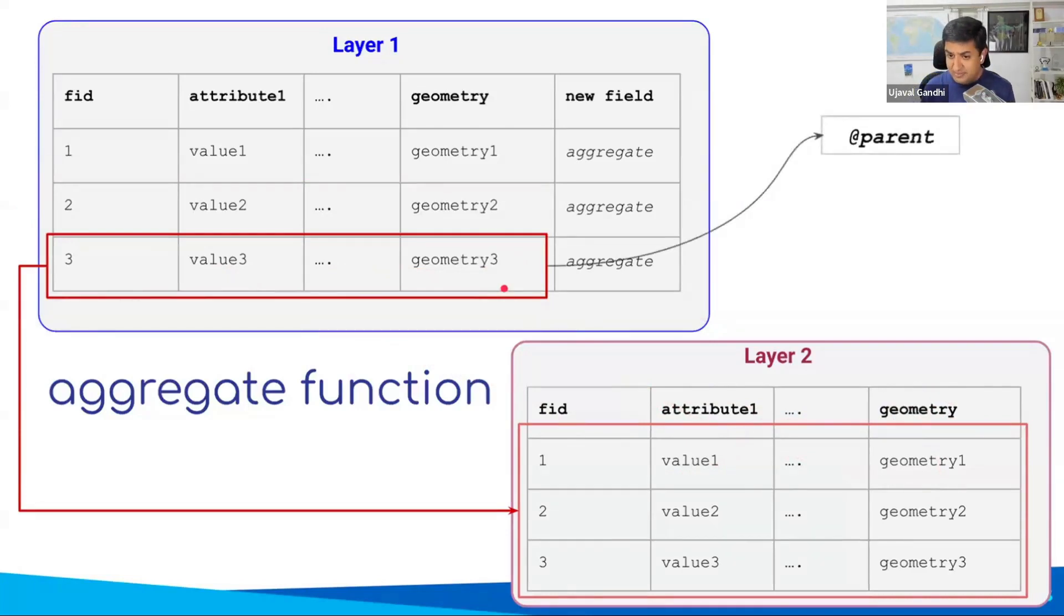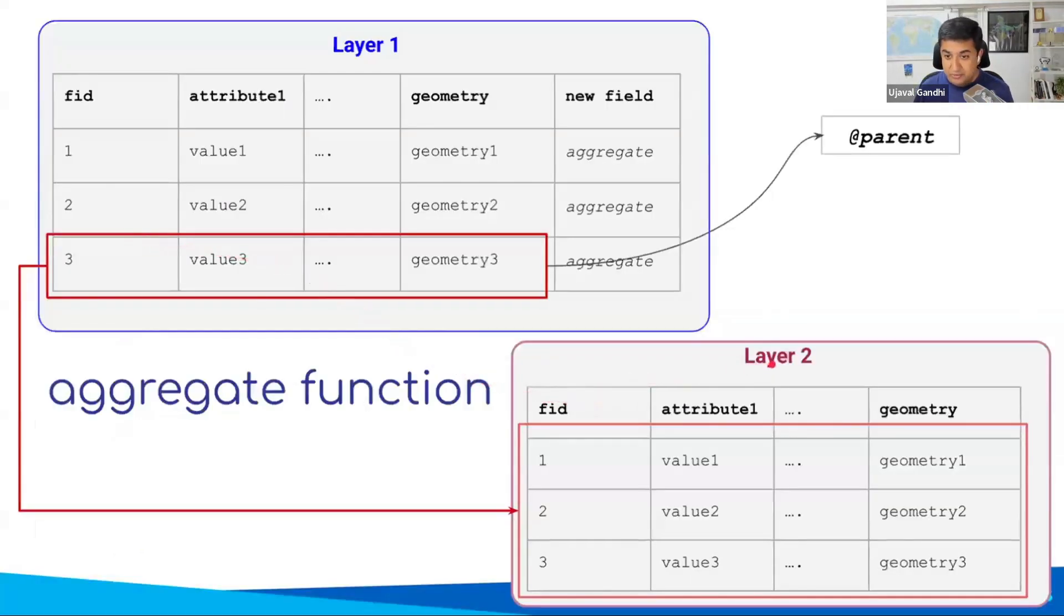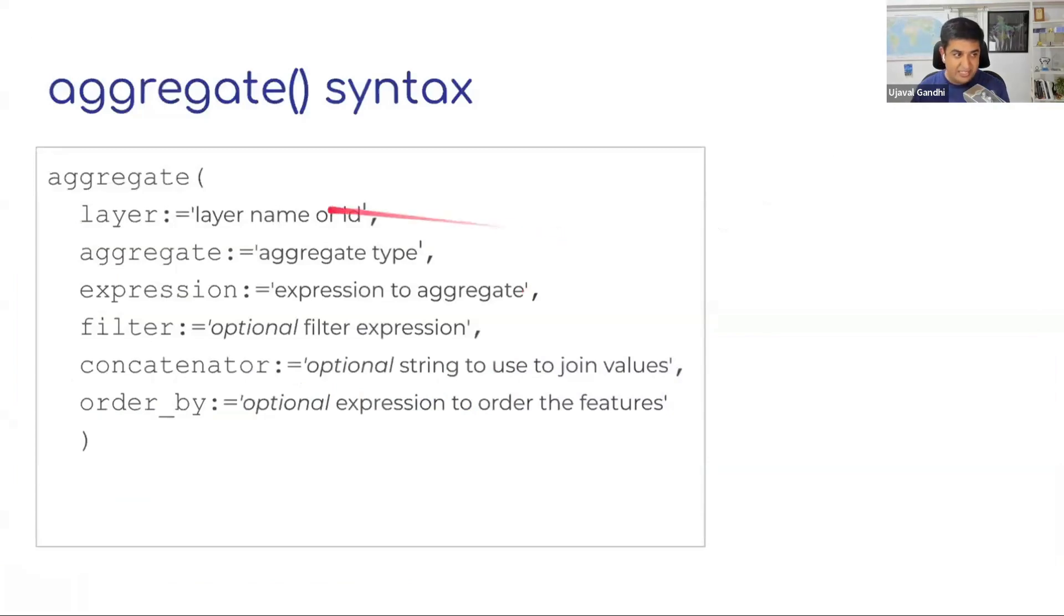Let's learn how to write the expression where we can look at two layers at a time and compute some results. This is the syntax of an aggregate expression. It takes many parameters. Some of them are optional. You have to give a layer. Whenever you say an aggregate function, layer name. The layer name is always referring to layer two. You're writing aggregate expressions in layer one, in a field calculator. And whatever layer you're writing, that's your layer one. The layer that you define within the aggregate is layer two. I'm writing an expression, what other layer we want to look at. The layer name refers to the other layer that you want to look at.